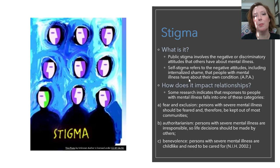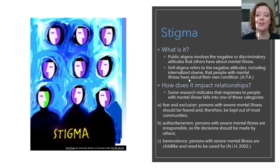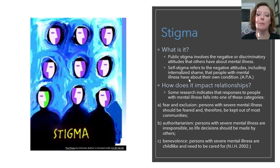One of these categories typically applies to how people respond to those with mental illness. There's a fear factor — this idea that people with mental illness should be kept out of the community. There's also the idea that people with mental illness are irresponsible, that somehow they've made some bad choice, and that life decisions should be made by others. And finally, that people with severe mental illness are childlike and need to be taken care of. So these are three different types of stigma, all harmful in their own ways.